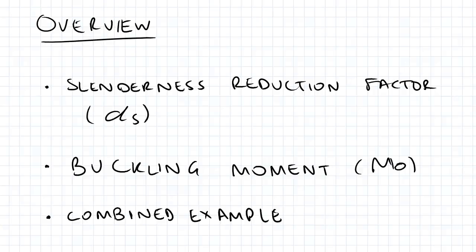Hi guys, just a quick overview of today's video. We'll be looking at the slenderness reduction factor alpha s and also buckling moment Mo. I'll be doing a combined example that brings in all the stuff we've learned on alpha m and alpha s, and that's the calculation of phi Mbx, the member buckling capacity.